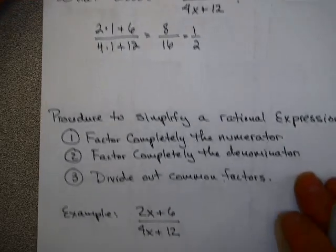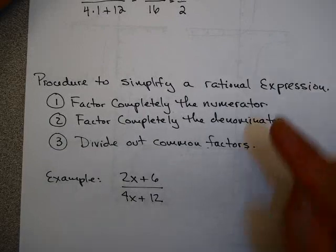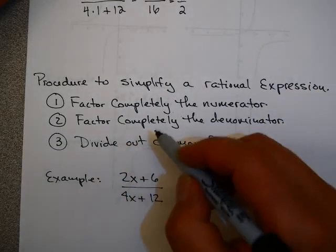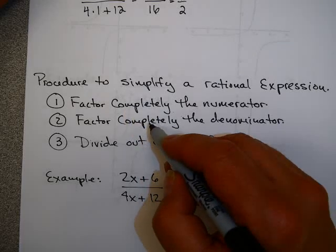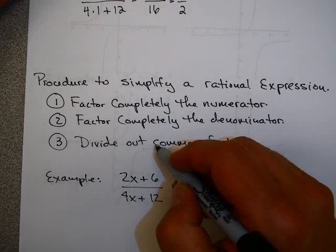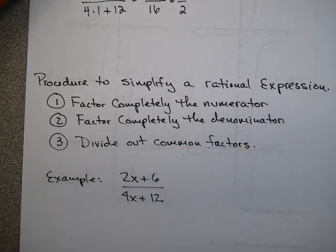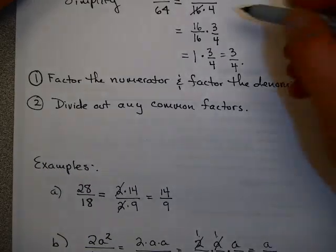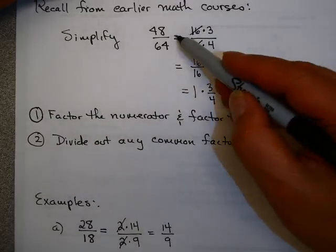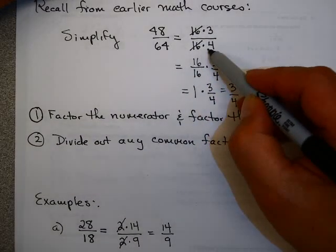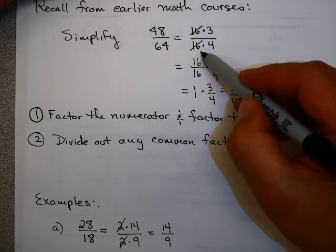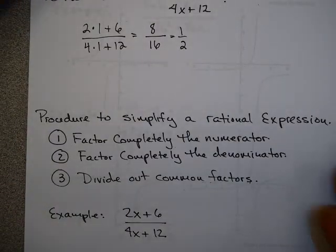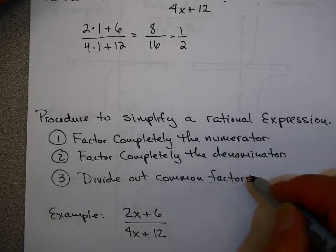So the procedure to simplify a rational expression is always these three steps: factor completely the numerator, factor completely the denominator, and then divide out any common factors. This is really no different than what we did before — you factored the numerator, factored the denominator, and divided out common factors. It's just a little harder because we're dealing with variables now.